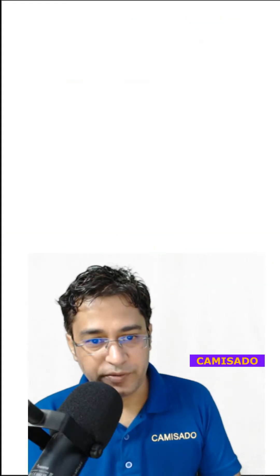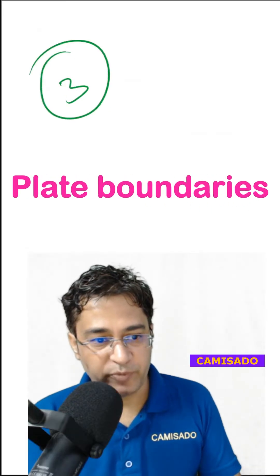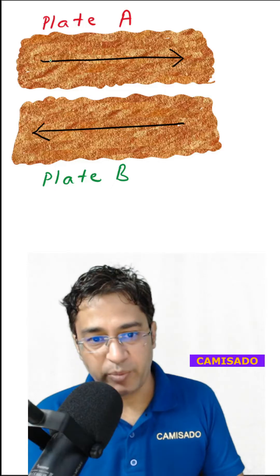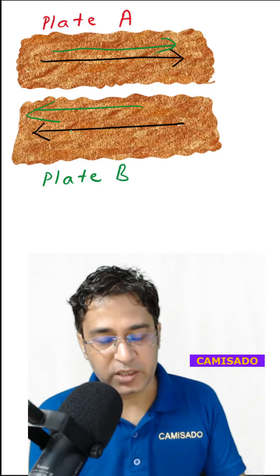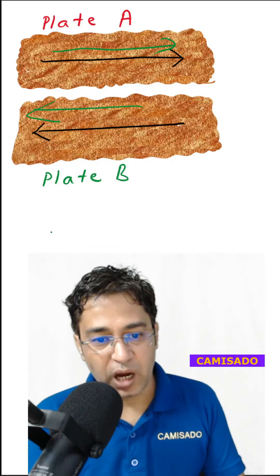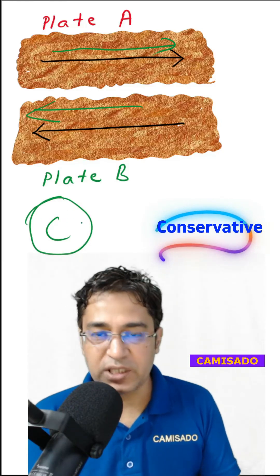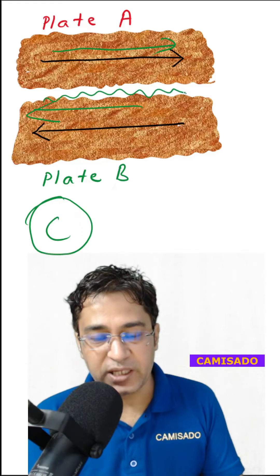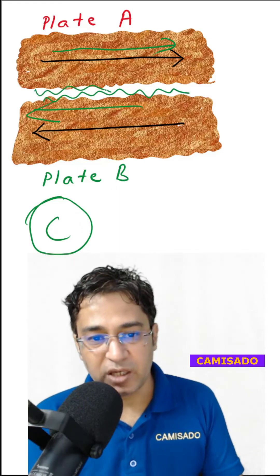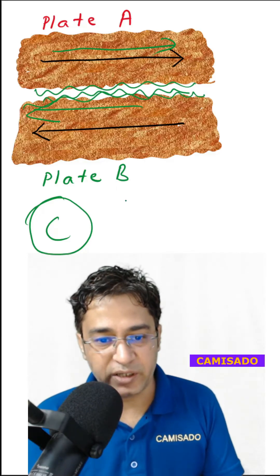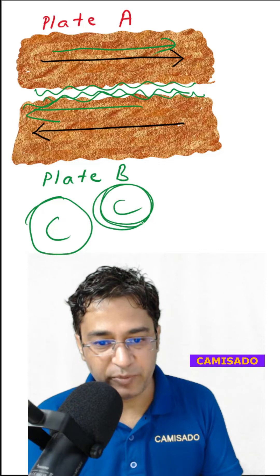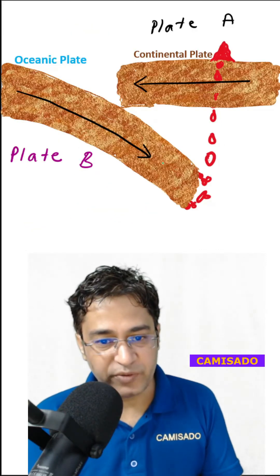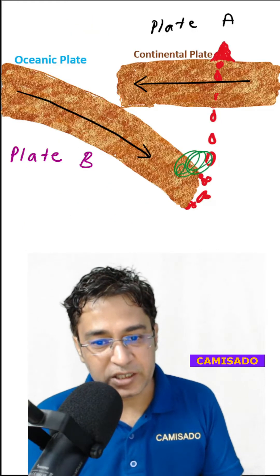Let us first understand the three types of plate boundaries. This type of plate boundary, where two plates — plate A and plate B — are just moving parallel to one another, are called conservative plate boundaries. These are called conservative because here the crustal material is staying conserved; it is neither being destroyed nor is new crustal material being created.